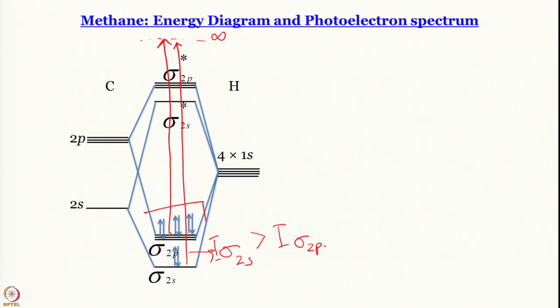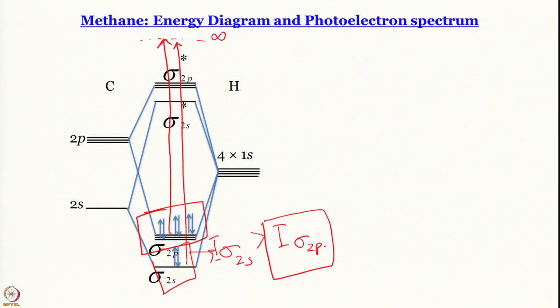Filling in the electrons: 2, 4, 6, 8 electrons fill the bonding MOs. How many ionization energies will there be? Two — because there are 2 kinds of energy levels. The σ₂ₛ orbital is associated with a higher ionization energy than the σ₂ₚ orbitals. Additionally, the population of σ₂ₚ is three times that of σ₂ₛ, so in the photoelectron spectrum the band corresponding to σ₂ₚ (lower ionization energy) should be 3 times as intense as the band from σ₂ₛ (higher ionization energy).